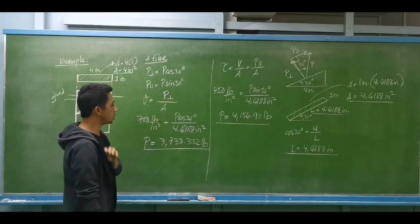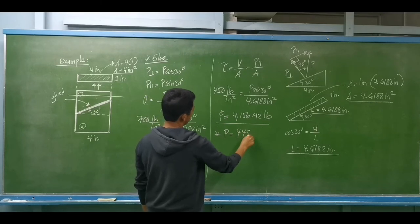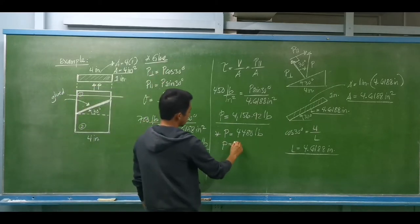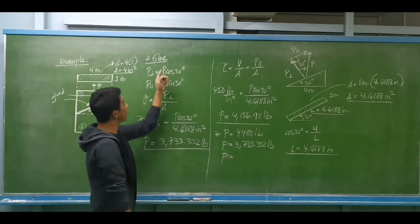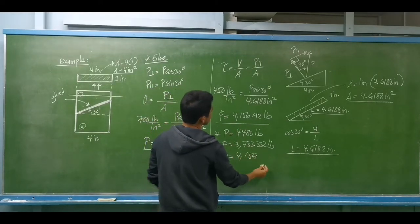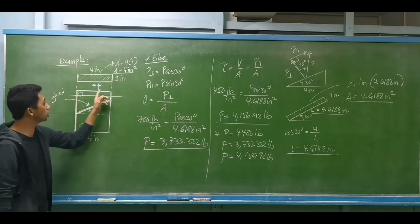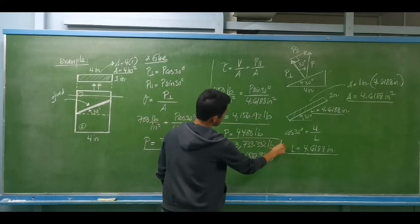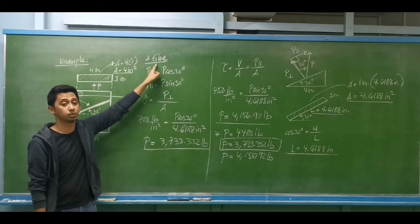Now if we are to design, based on the wood the value of P is 4,480 pounds. Based on the glue normal stress, P is 3,733.332 pounds. Based on the glue shearing stress, P is 4,156.92 pounds. When designing for a safe load, the smallest value is the safest. The smallest value is 3,733.332 pounds, based on the allowable normal stress of the glue. This will be our solution.